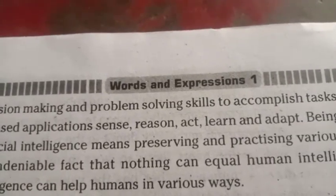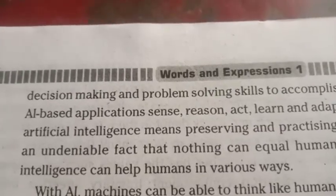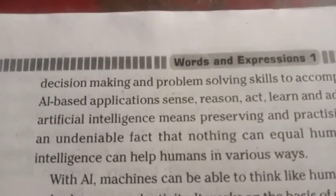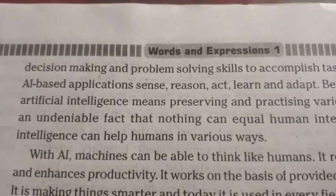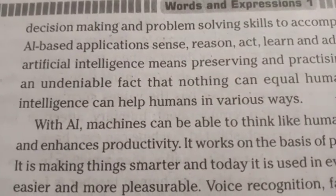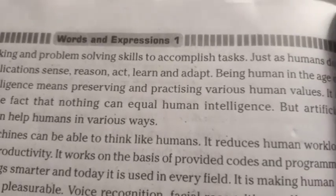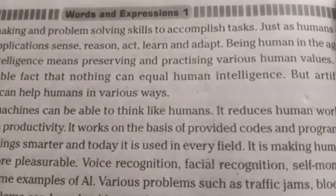Being human in the age of artificial intelligence means preserving and practicing various human values. It is an undeniable fact that nothing can equal human intelligence, but artificial intelligence can help humans in various ways. With AI, machines can be able to think like humans. It reduces human workload and enhances productivity. It works on the basis of provided courses and programs, and it is making things smarter.